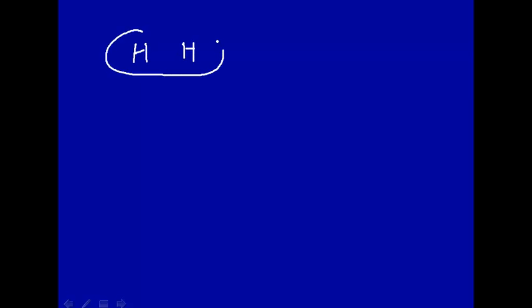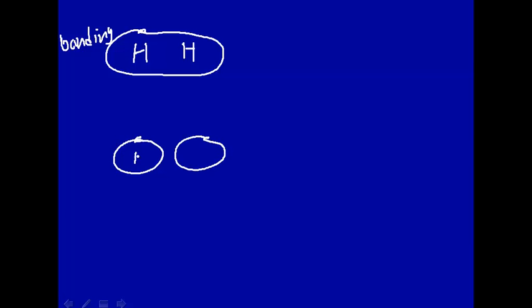Remember from a previous lecture that the bonding orbital of H2 looks like this — this is bonding. And the anti-bonding orbital looks something like this. It probably didn't look exactly like this, but this is an artist's conception where this is the H and this is the H. Remember for the anti-bonding orbital we had regions of different sign. Let's call this the positive region and this the negative region — this is the anti-bonding orbital.